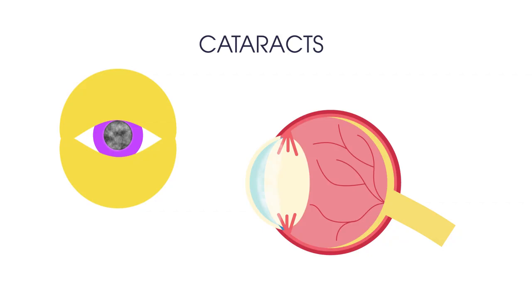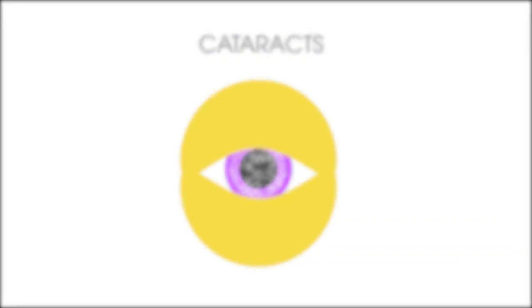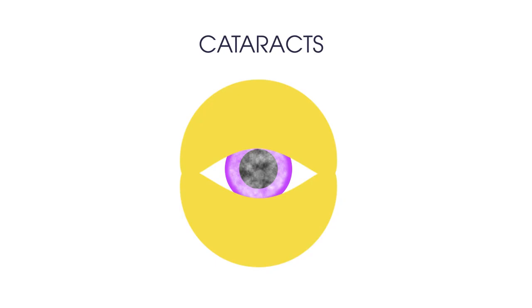Cataracts are more common in older people. Over time the cloudy patches usually become bigger causing blurry, misty vision and eventually blindness. Cataracts can be treated by surgery which can involve replacing the lens with a synthetic one.